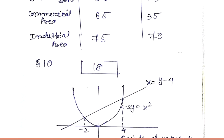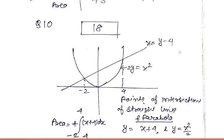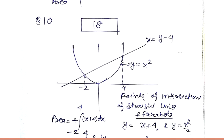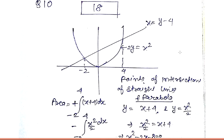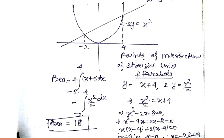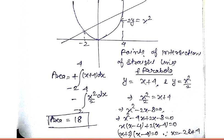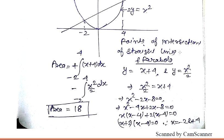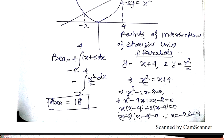The answer to question ten is 18. We draw the graph of parabola 2y = x² and line x = y − 4 and find the points of intersection using both equations. We integrate from −2 to 4: the area under the line (x + 4)dx minus the area under the parabola (x²/2)dx. The common area works out to 18.